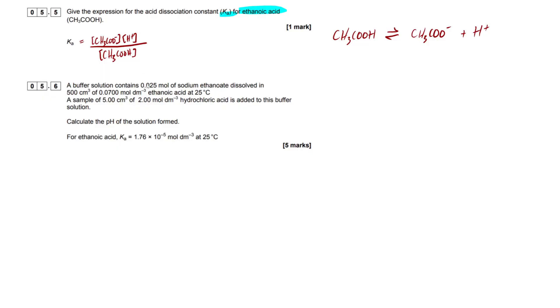A buffer solution contains 0.025 mol of sodium ethanoate dissolved in 500 cm³ of 0.07 mols per decimetre cubed ethanoic acid, and we've got a temperature here, so it's just room temp, standard conditions. A sample of 5 cm³ of 2 mols per decimetre cubed hydrochloric acid is added to this buffer solution. Calculate the pH of the solution formed, and we're given a Ka value here. AQA likes pH to two decimal places.